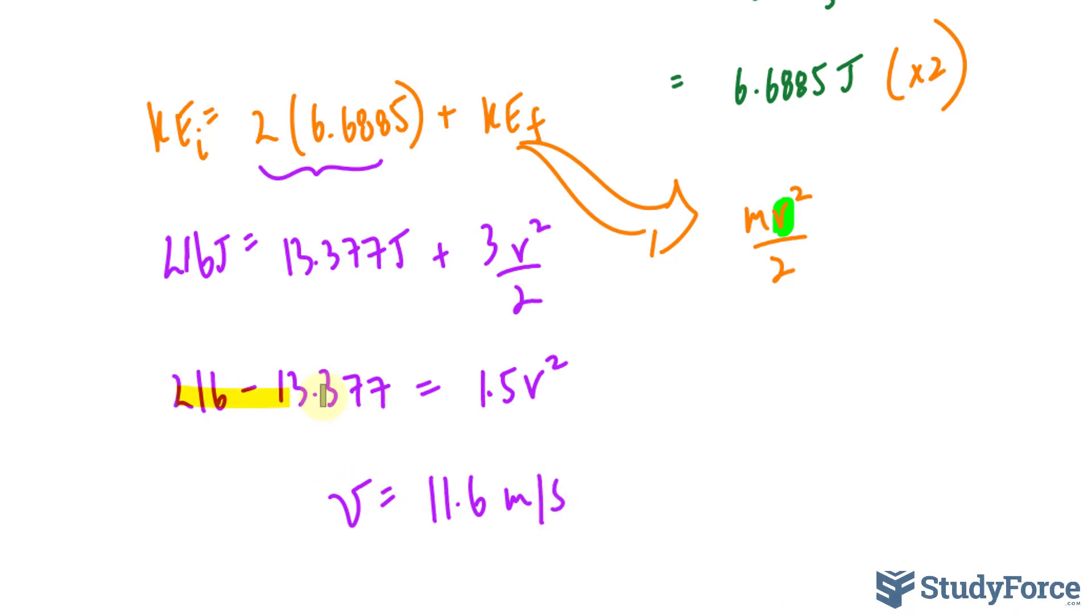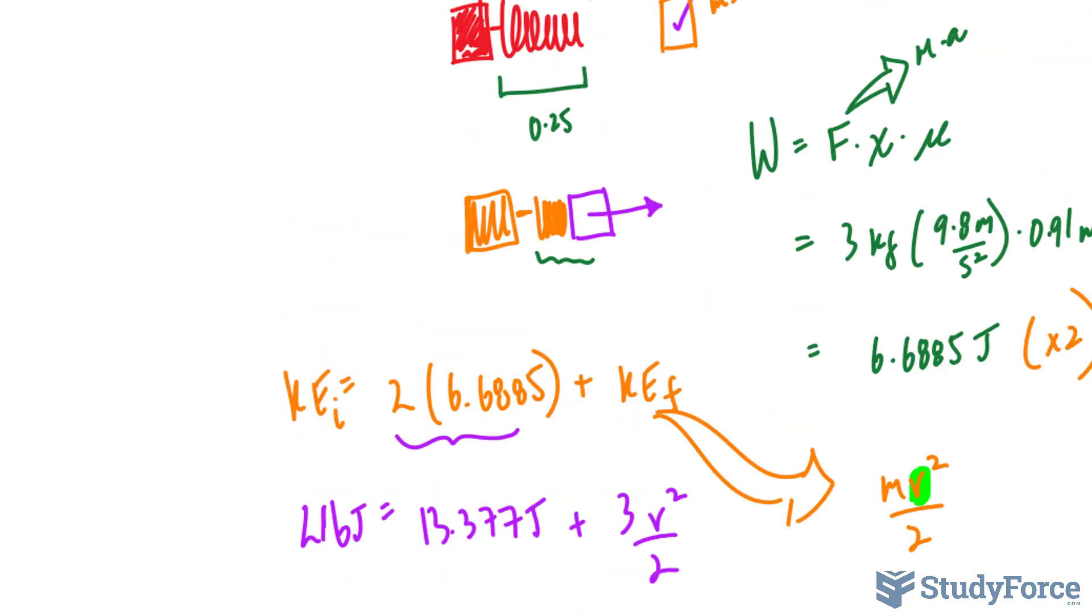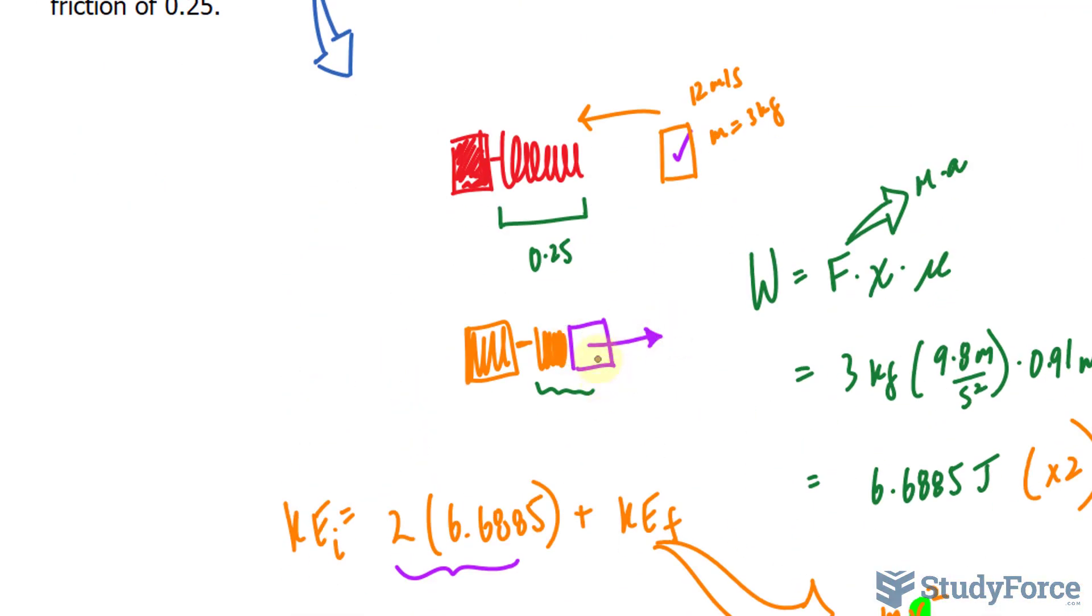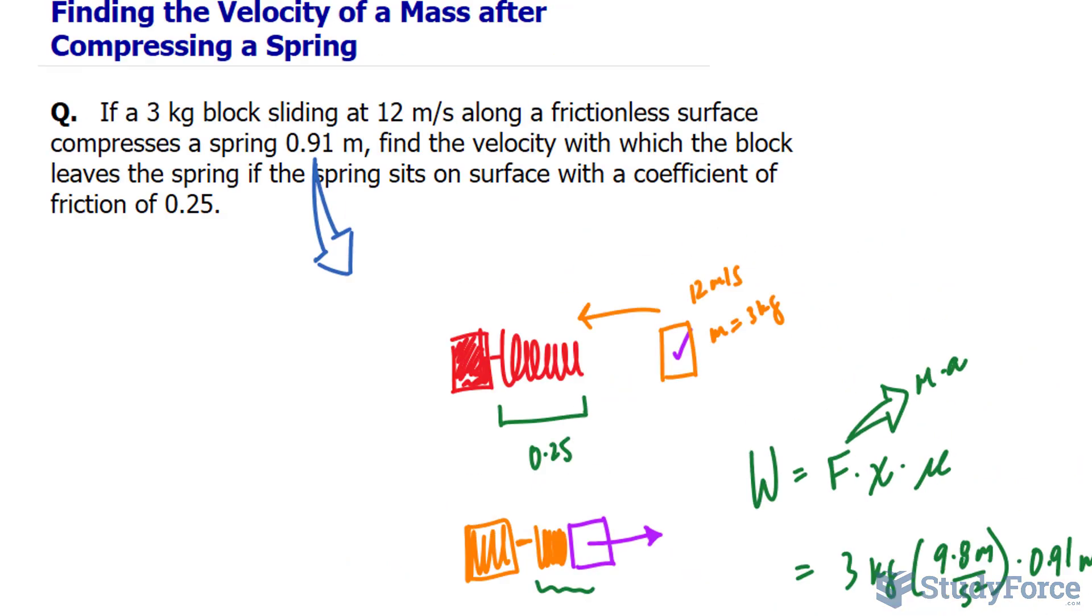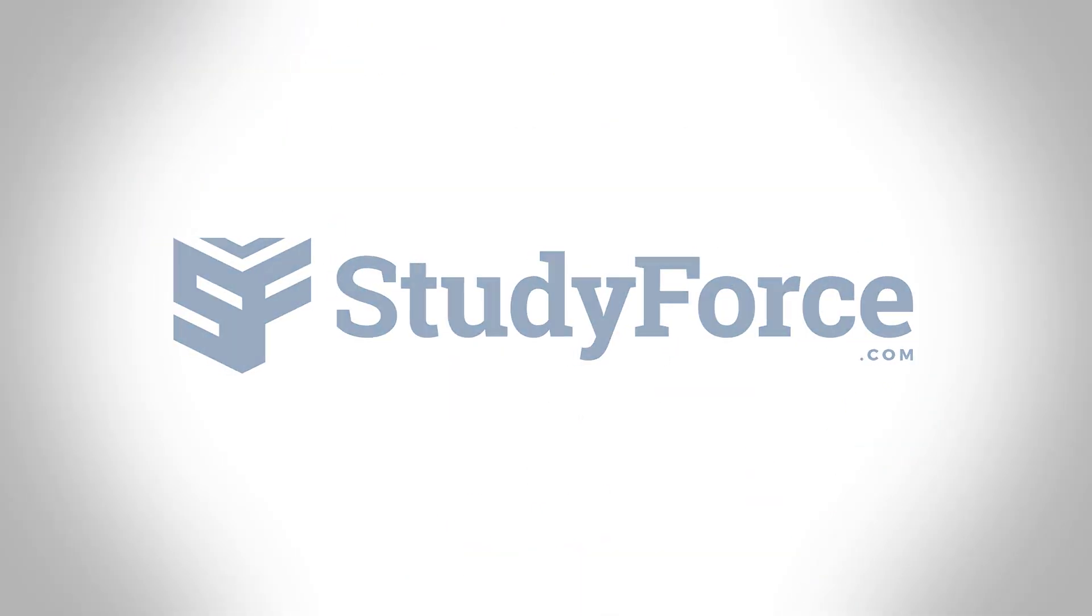So in case you're confused, we subtracted these, then we divided both sides by 1.5, and then we square rooted both sides. So that is the final velocity of this mass as it's going that way. And there you have it. That is how to find the velocity of a mass after it has compressed the spring.